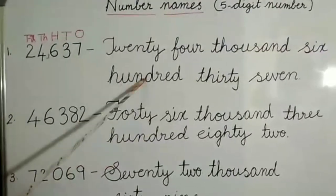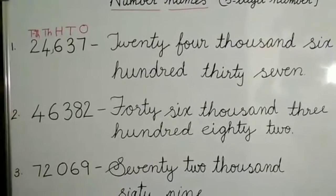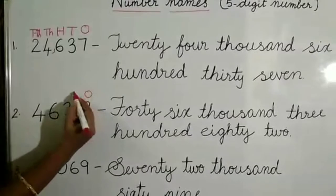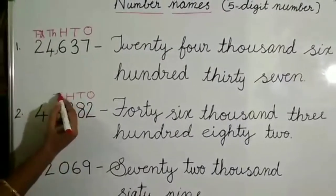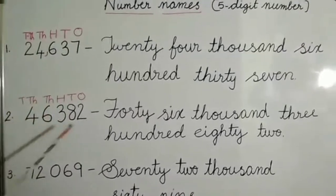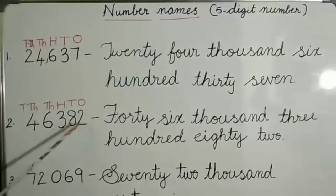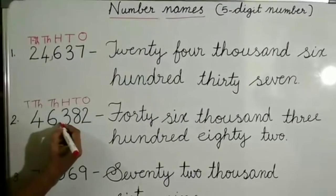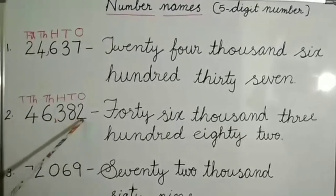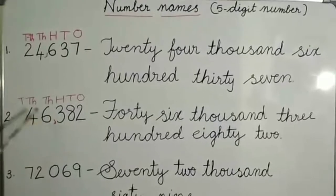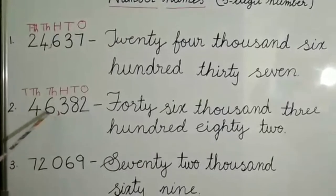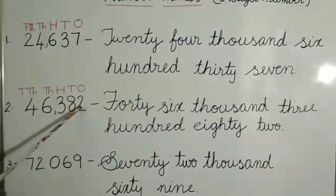Second example: here also, first we write the places — ones, tens, hundreds, thousands, ten thousands. We separate the digits by placing a comma before the ones period. Three hundred eighty-two is in the ones period and forty-six is in the thousands period. The number name is forty-six thousand three hundred eighty-two.